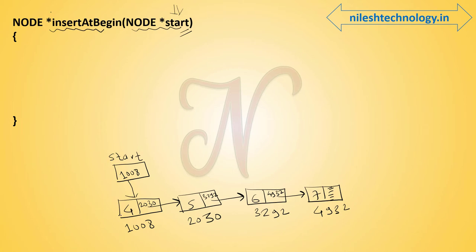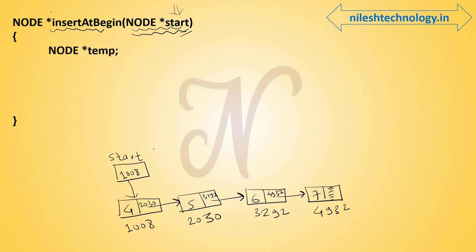This is your ready linked list which we pass as a parameter. In this linked list we have to add one node at the beginning. First, we declare a temp variable, and by using the getNode function — which we have already seen in a previous video — we create a single node.